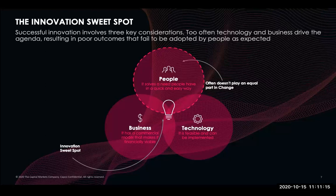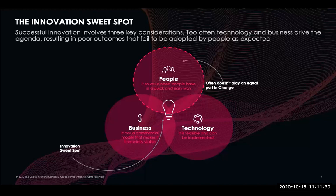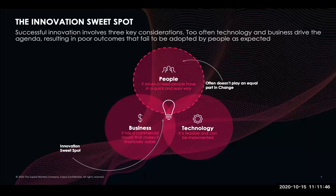What I've observed working with clients in operations and front office is that when we talk about innovation in those environments, there's a very strong focus on technology — especially in operations. Talk about innovation and straight away: RPA, chatbots, blockchain, AI. Giving this talk about design thinking and human-centered innovation is always a bit of a challenge, because in operations, innovation is often about removing the dependency on people, since people do costly, low-value mundane tasks that add to operational risk and cost.